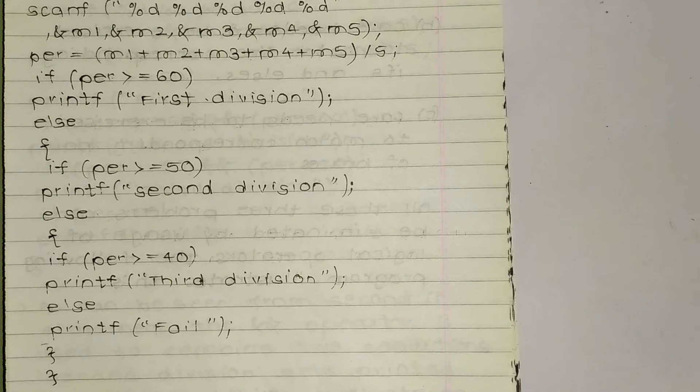Now we are comparing with if. If per is greater than or equal to 60, so we have that data. If per is greater than or equal to 60, printf first division. So here we are using if else statements.